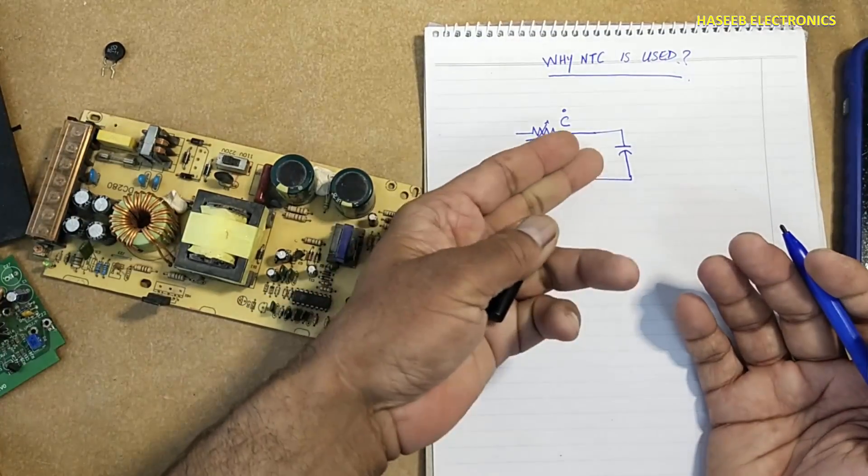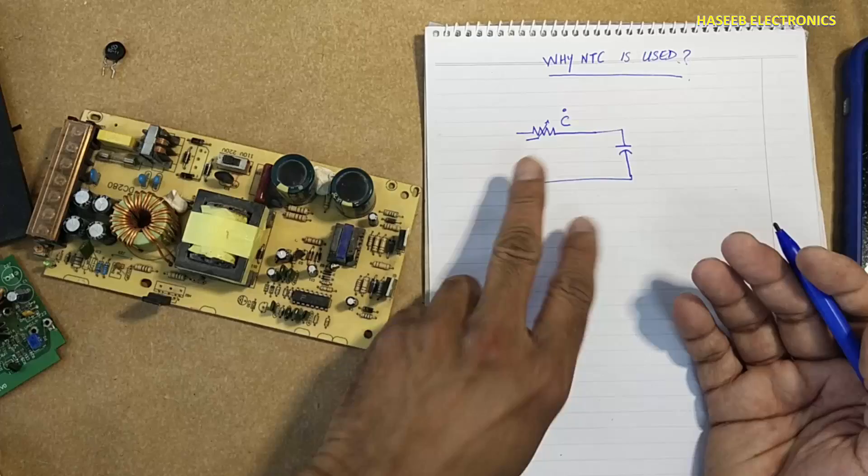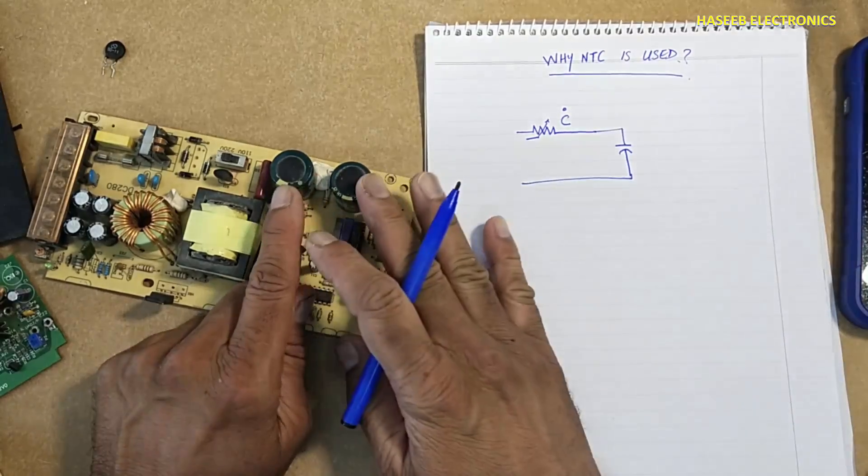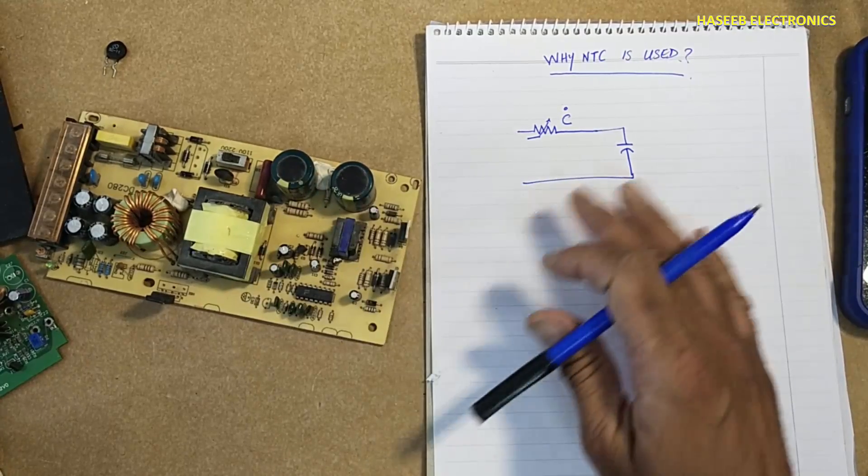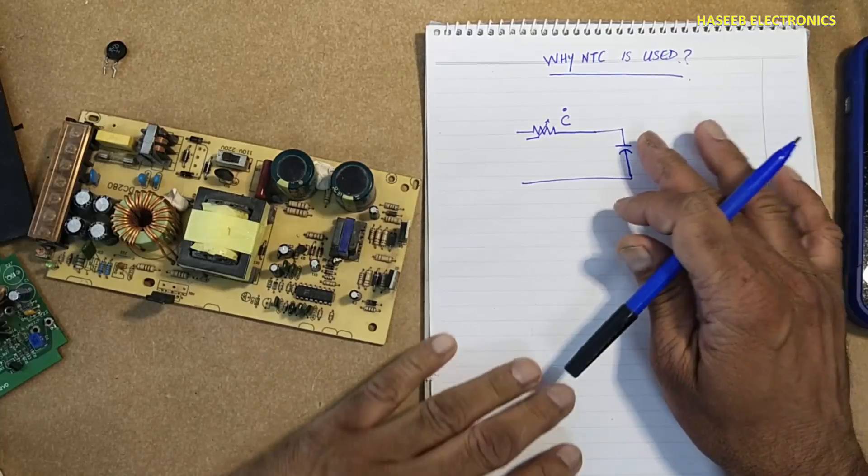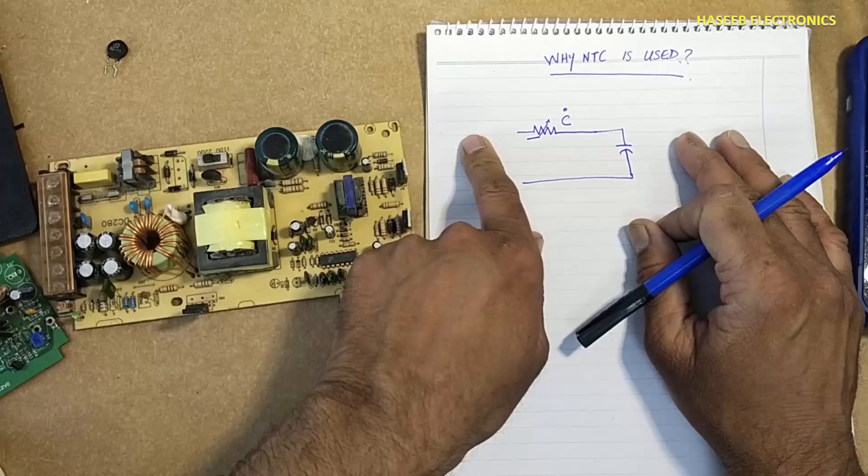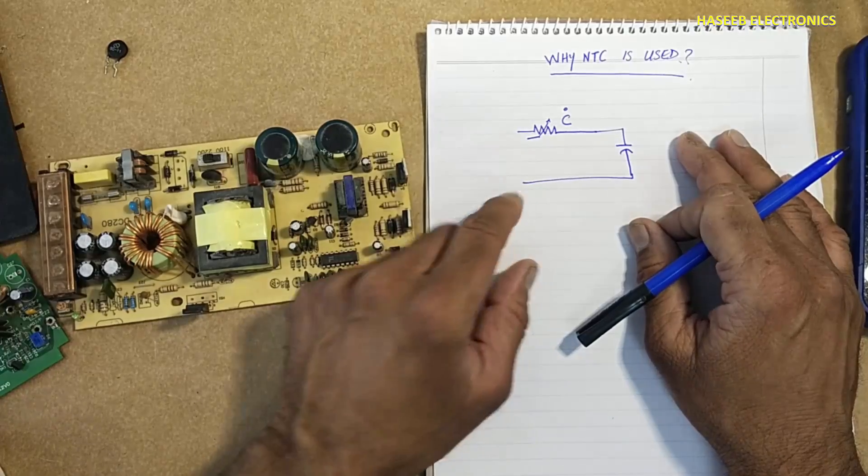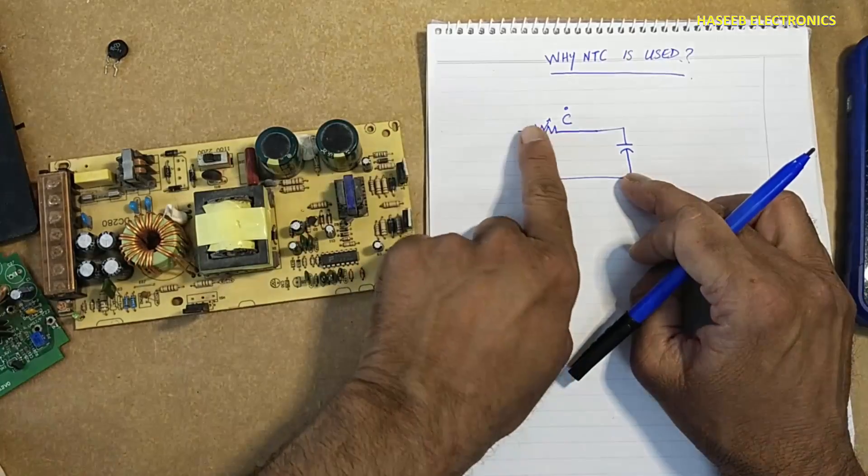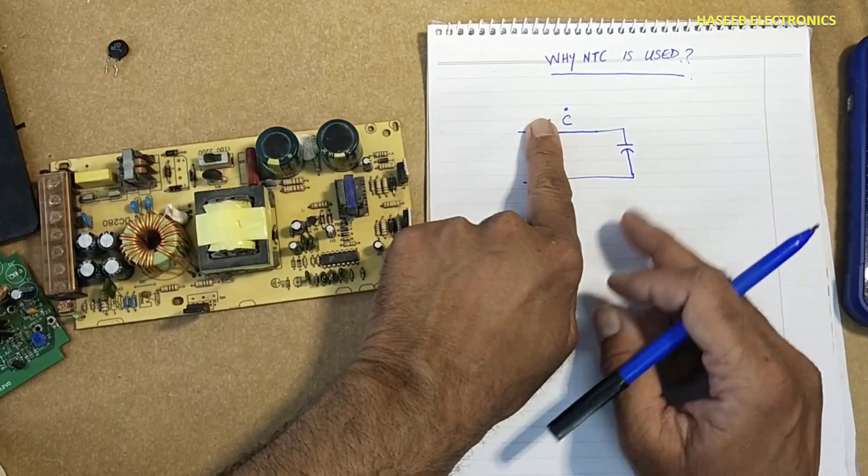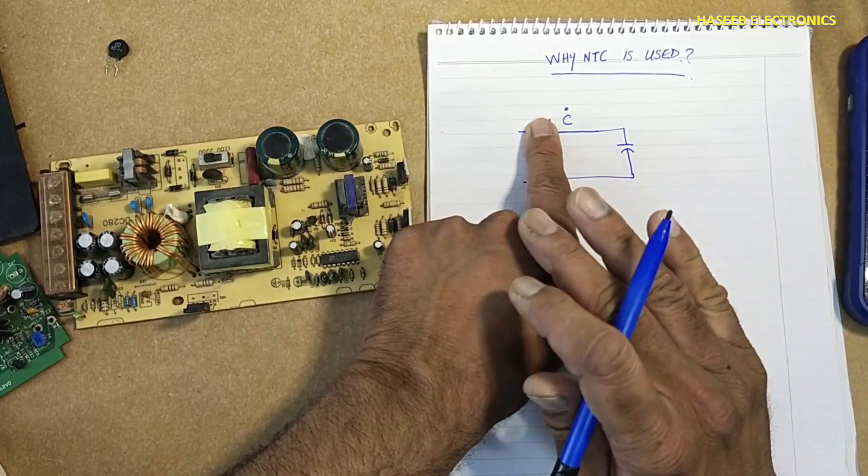It can be connected in positive line or negative line. When this power supply is off, this capacitor is in discharge position, it is empty. If it is connected to any power source, at that time if there is no protection, it will draw very heavy current.